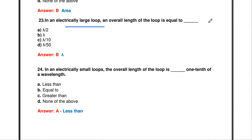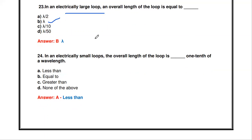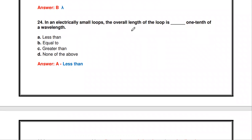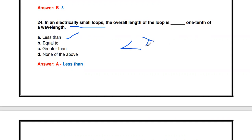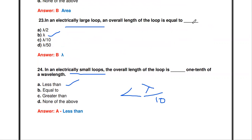In an electrically large loop, the overall length of the loop is equal to lambda. In an electrically small loop, the overall length is less than one-tenth of the wavelength, that is less than lambda/10. If the length is less than lambda/10, it is called a small loop; if the overall length equals lambda, it is a large loop.